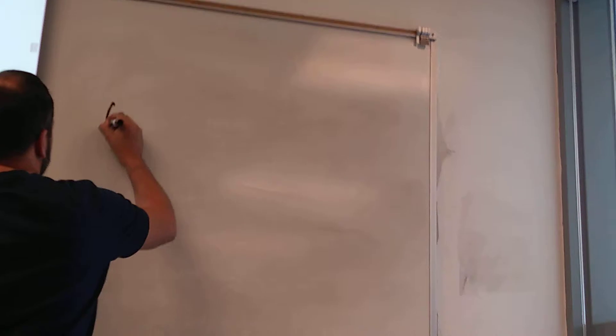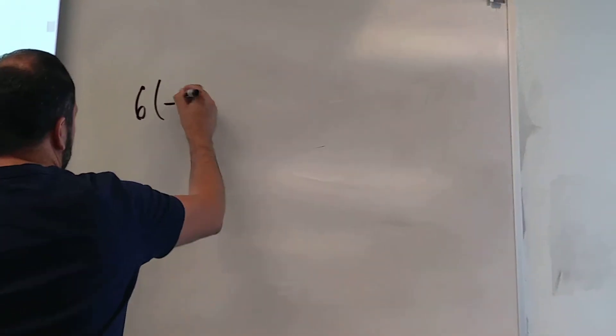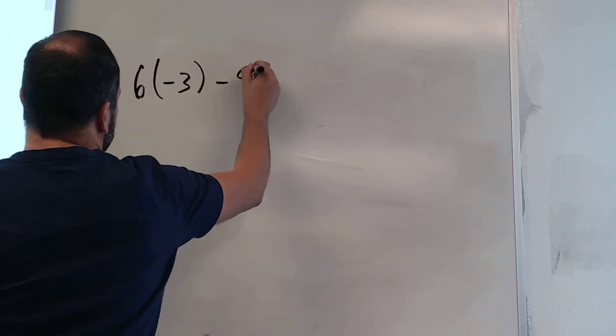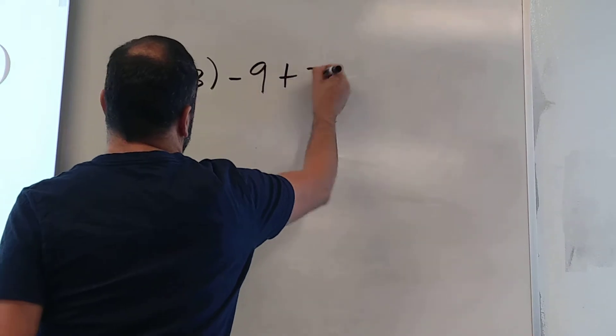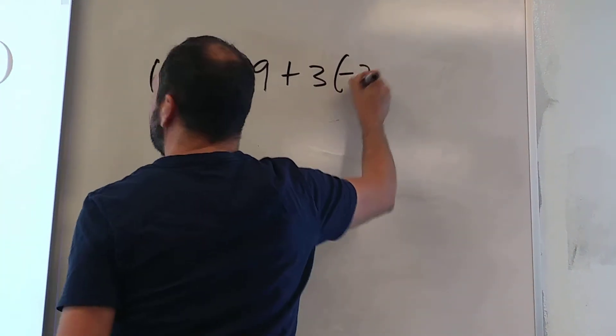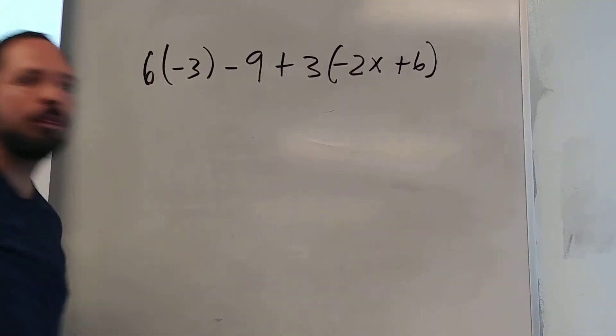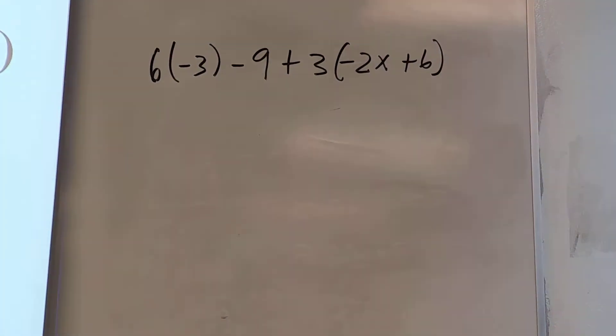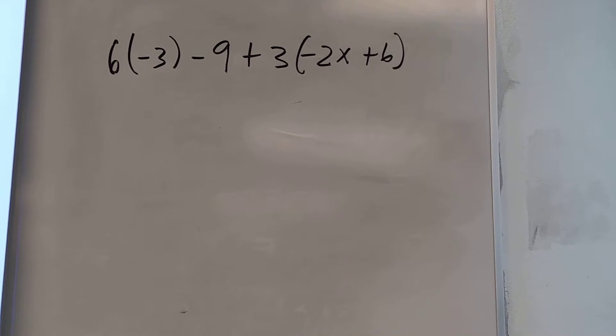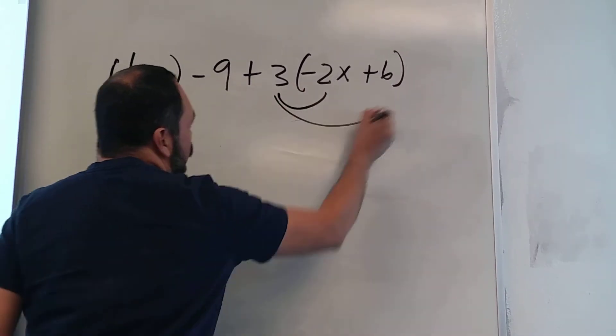So I've got 6 times negative 3 minus 9 plus 3 times negative 2x plus 6. The first thing we're going to do is use distributive property. So I'm going to distribute the 3.